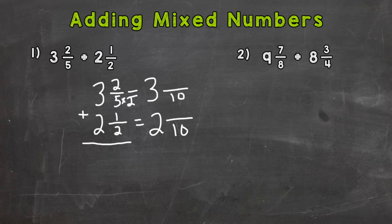Five times two is ten, so I need to do the same thing to the numerator to find an equivalent fraction. Two times two is four. I'm not changing the value of the problem, just renaming with a different denominator so they both have a common denominator of ten. For the second fraction: two times five gives me the common denominator of ten.